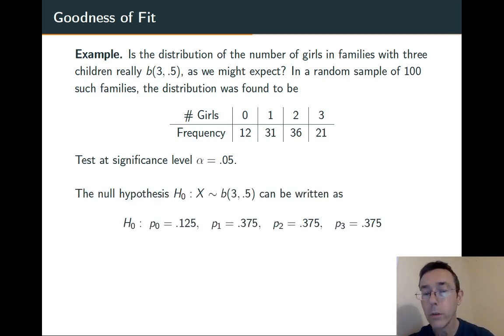So that's equivalent to the notion that 12.5% of the families will have no girls, 37.5% will have 1 girl, and so on. These are just binomial probabilities.